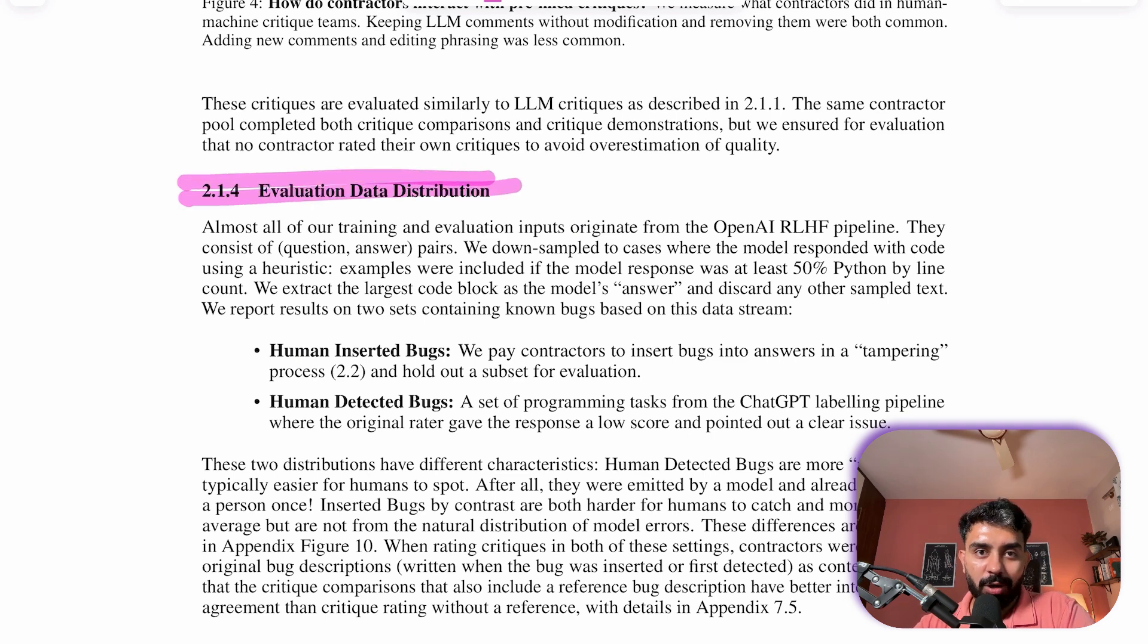Let's talk about the data distribution. How did they prepare the data for this model? Almost all training and evaluation data comes from the OpenAI RLHF pipeline consisting of question and answer pairs, and they focused on cases where the model's response was at least 50 percent Python by line count, using the largest code block as the answer and discarding the rest.